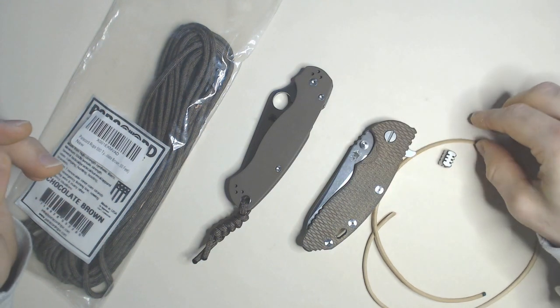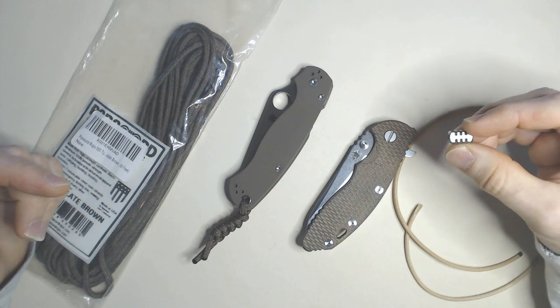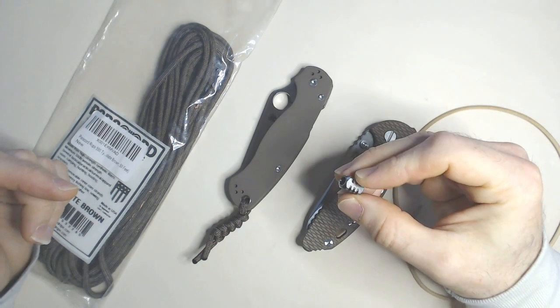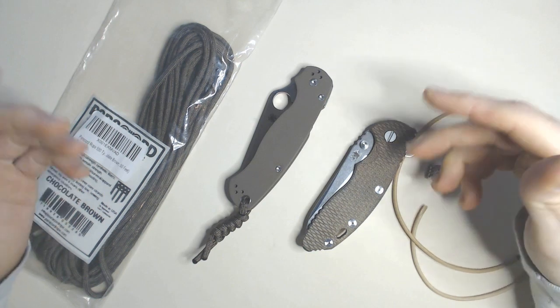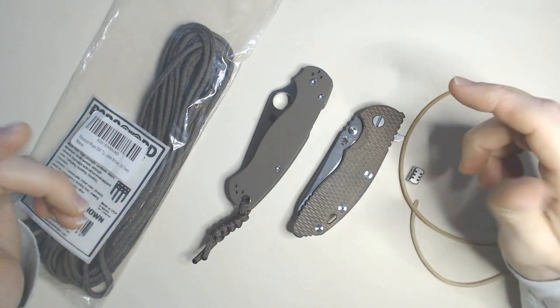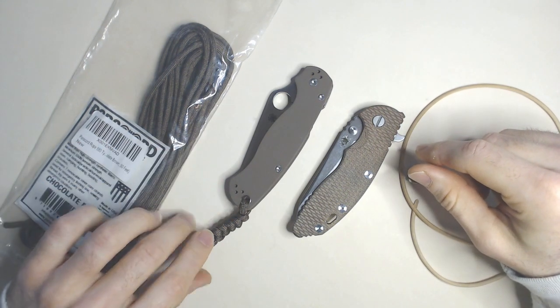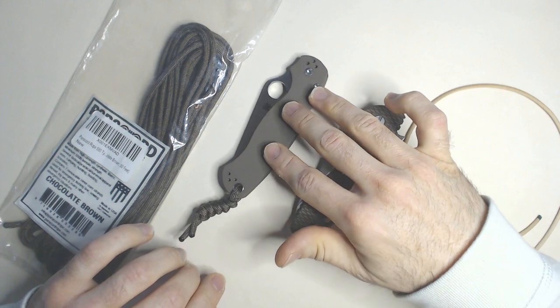I've never purchased a full-on lanyard before, although I have purchased these little beads here, these little lanyard beads. This one here being a little titanium bead just to dress it up. So I have a few of these I'll occasionally put on. The Para 2 I don't have one on currently, I just have the paracord.